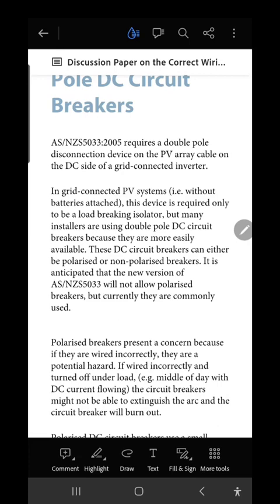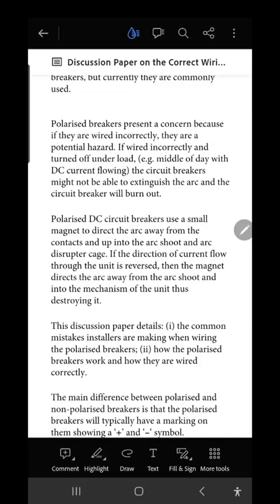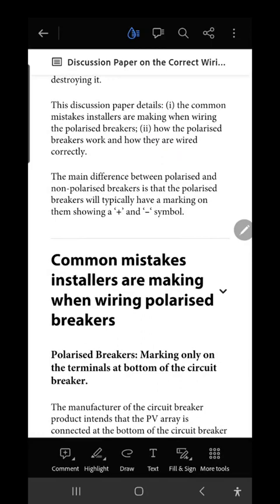It's anticipated that the new version of their standards will not allow polarized breakers, but currently they are commonly used. If the current flows in a certain direction, these polarized breakers basically flow from the positive to the negative, and that's why the markings are on the breakers to show you the direction.